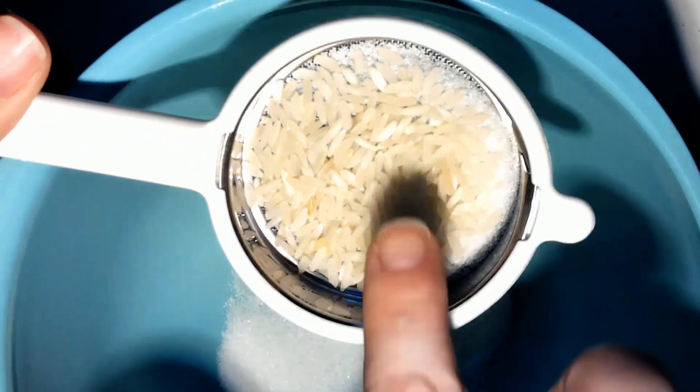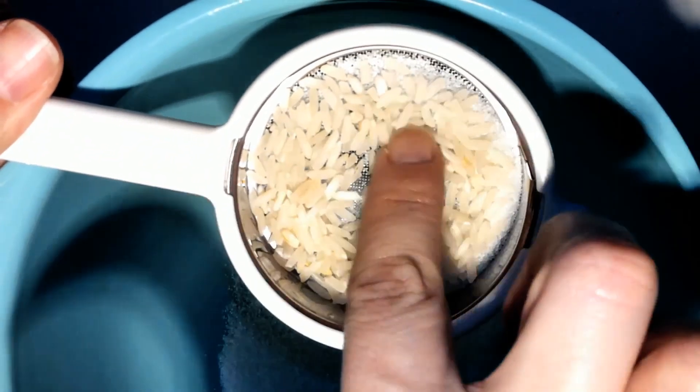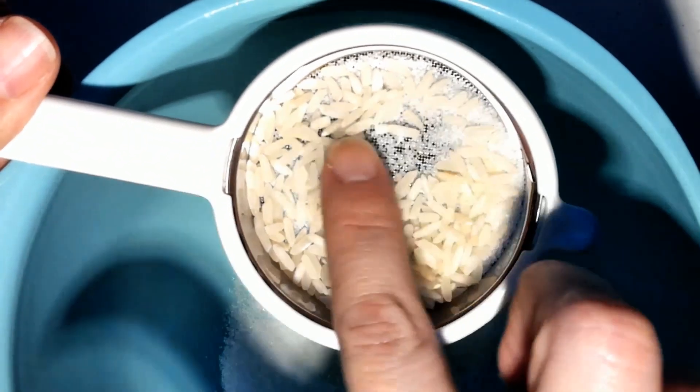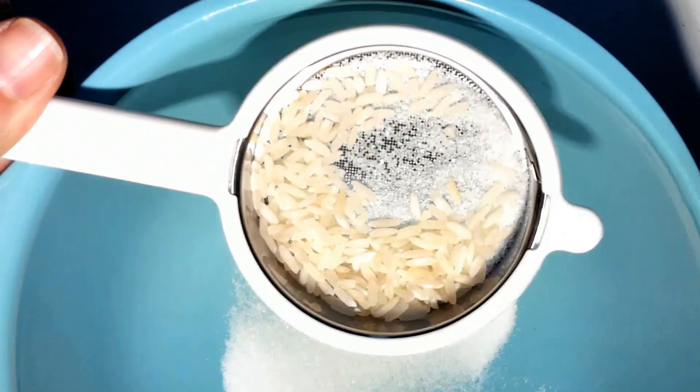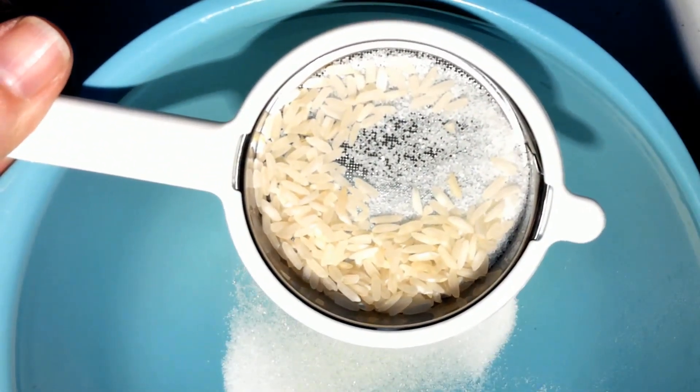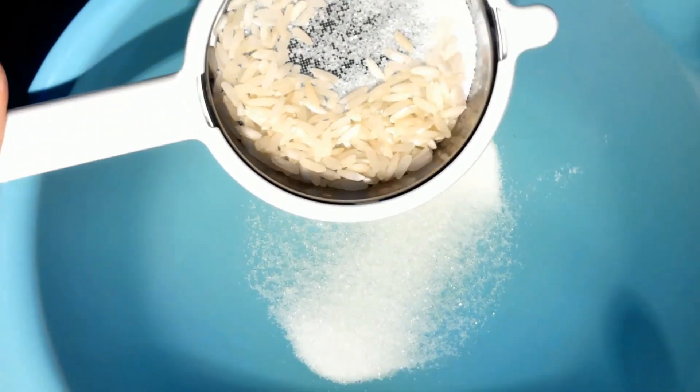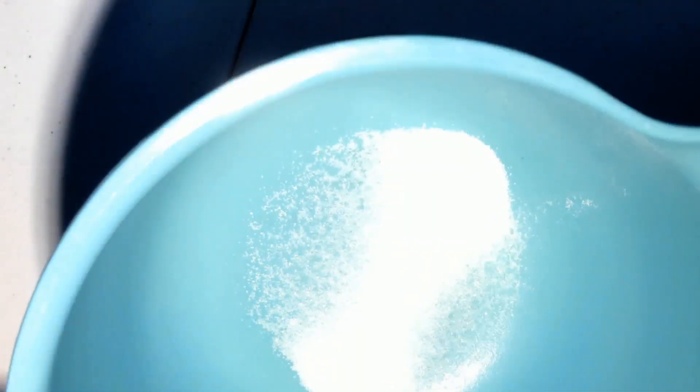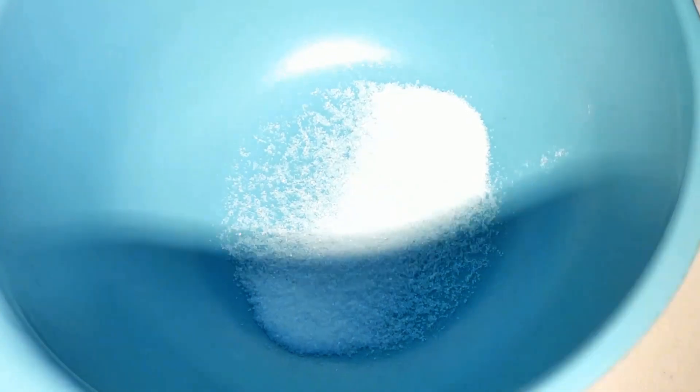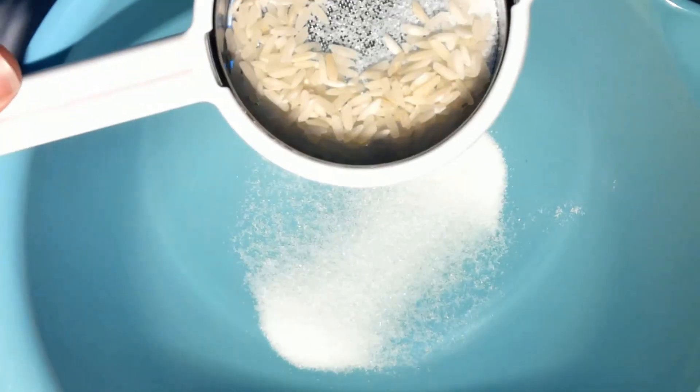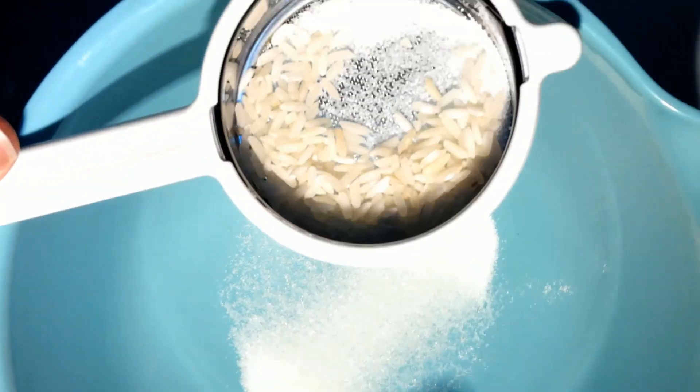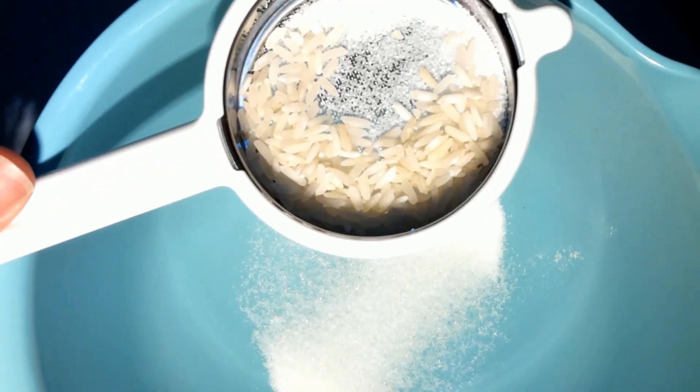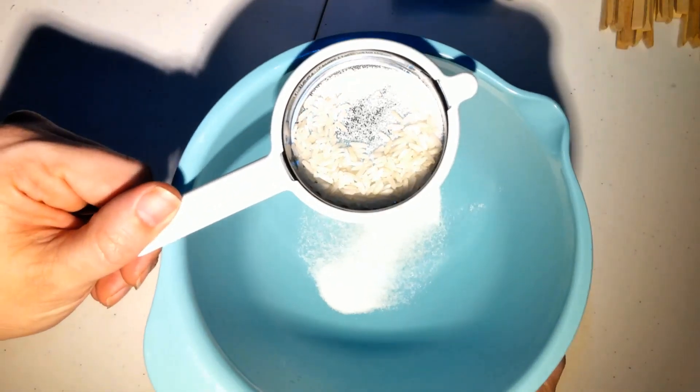So let's look at what we have here. Let me zoom in. There we go. So in our sifter we have the rice grains and we also have some sugar that didn't quite make it through yet. In our bowl we have all sugar and there are no rice grains at all in this bowl. So what conclusion can you draw from this evidence?